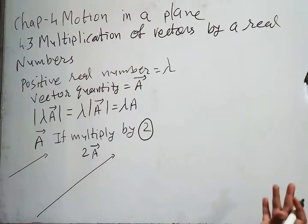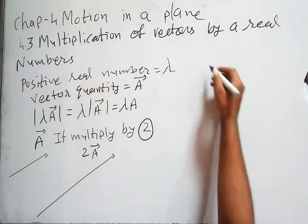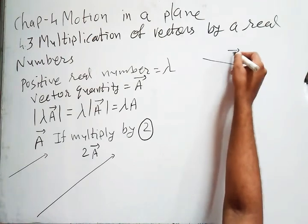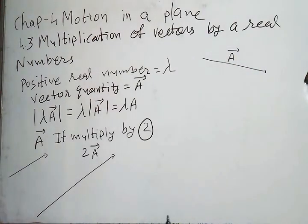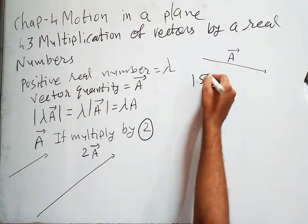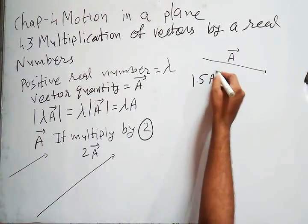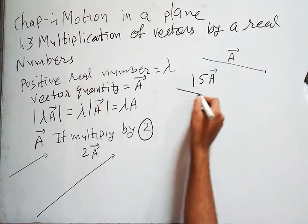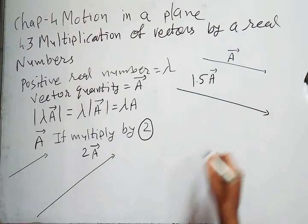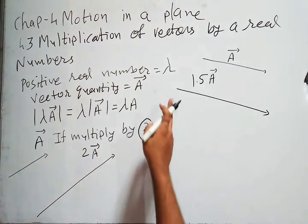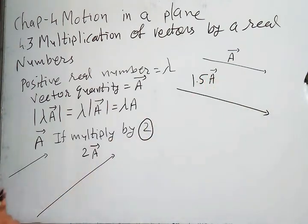For example, suppose that my vector is in this direction. If I multiply by 1.5, the vector is in that direction but now the magnitude is more. The direction is similar.